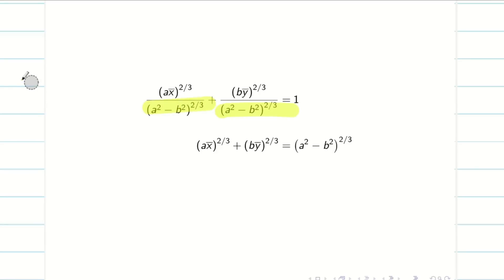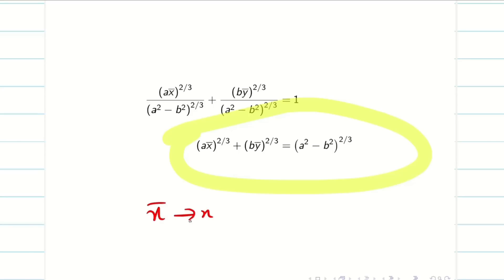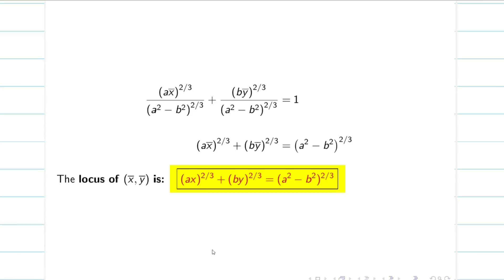We now have the relation between x̄ and ȳ without θ. Writing the locus of the centre of curvature by replacing x̄ and ȳ with x and y, the final answer is: (ax)^(2/3) + (by)^(2/3) = (a² − b²)^(2/3). Hope you understand.